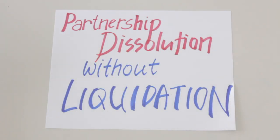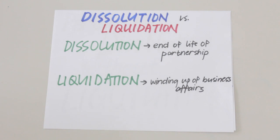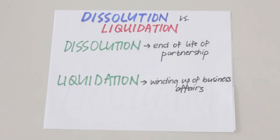Today we're going to be talking about partnership dissolution without liquidation, but first we have to make the distinction between dissolution and liquidation. Dissolution is basically just the end of the life of the partnership, while liquidation is the winding up of business affairs. Business may still continue even with the dissolution of a partnership — for example, admission of a new partner would dissolve the old partnership and form a new one, but the business still operates normally.